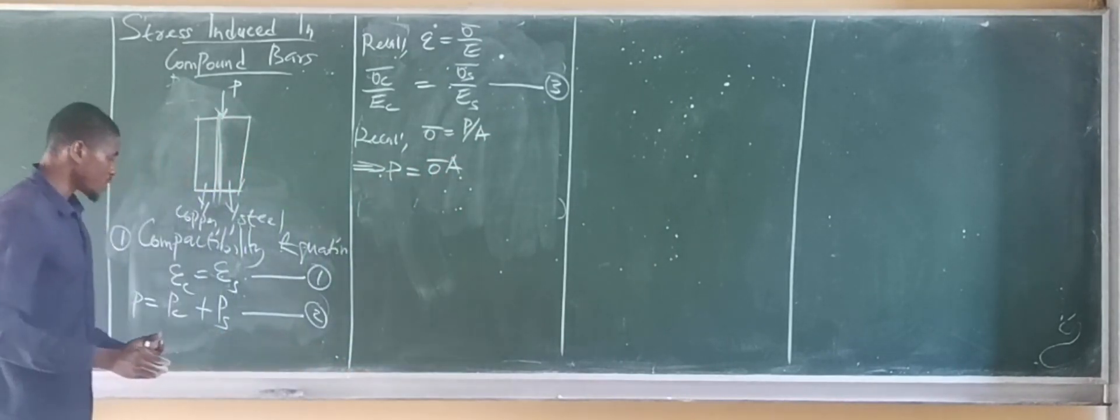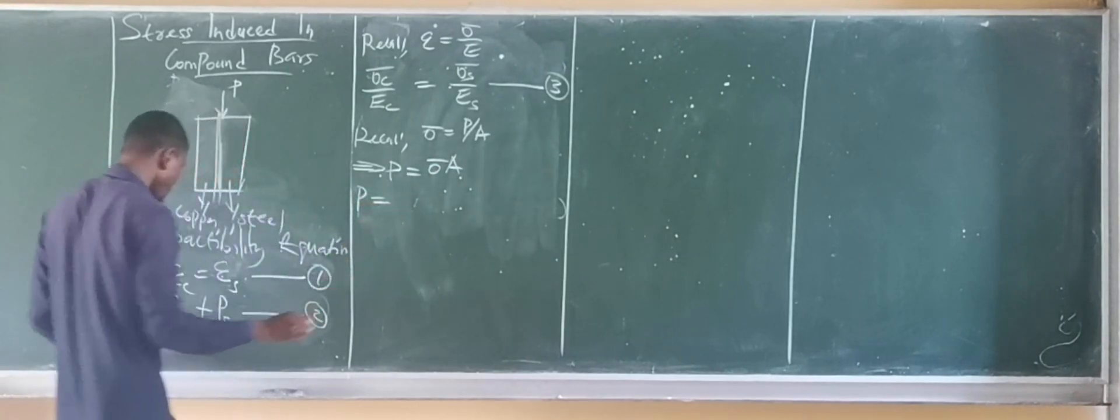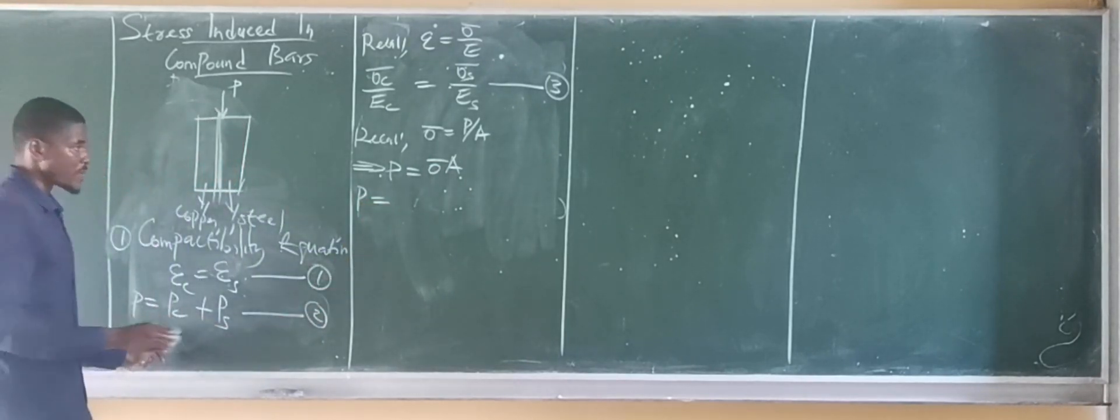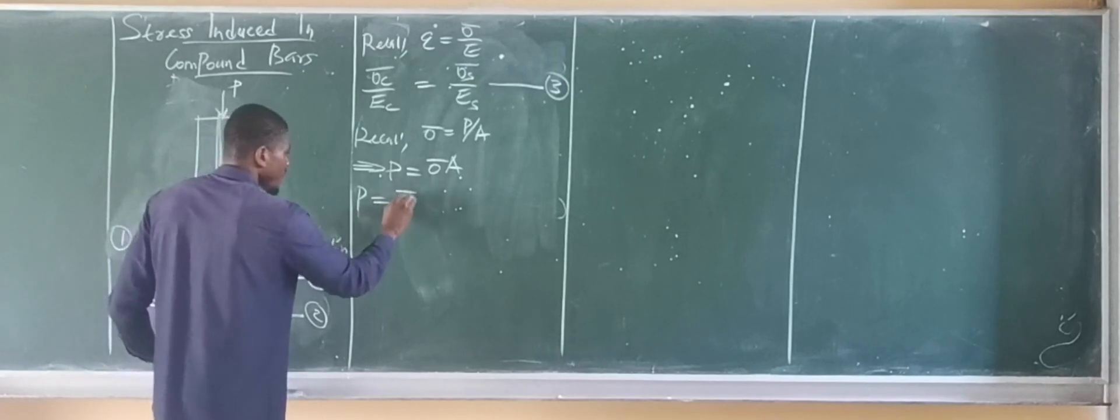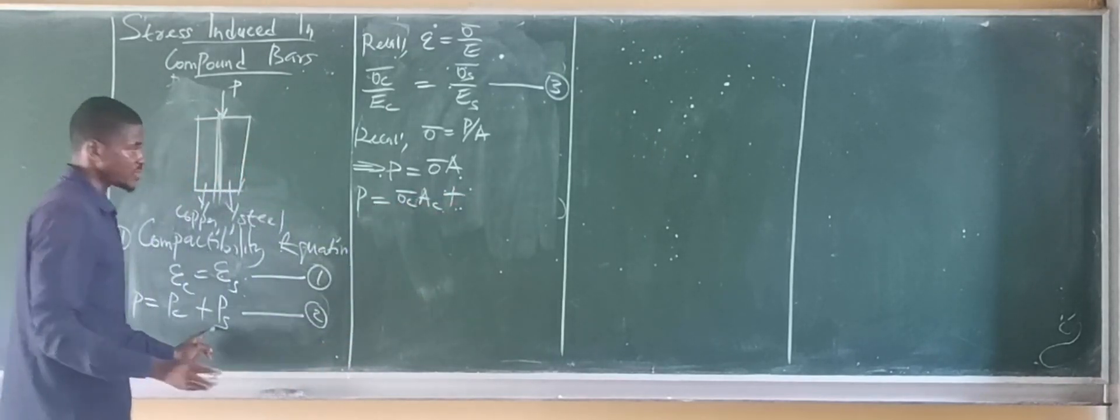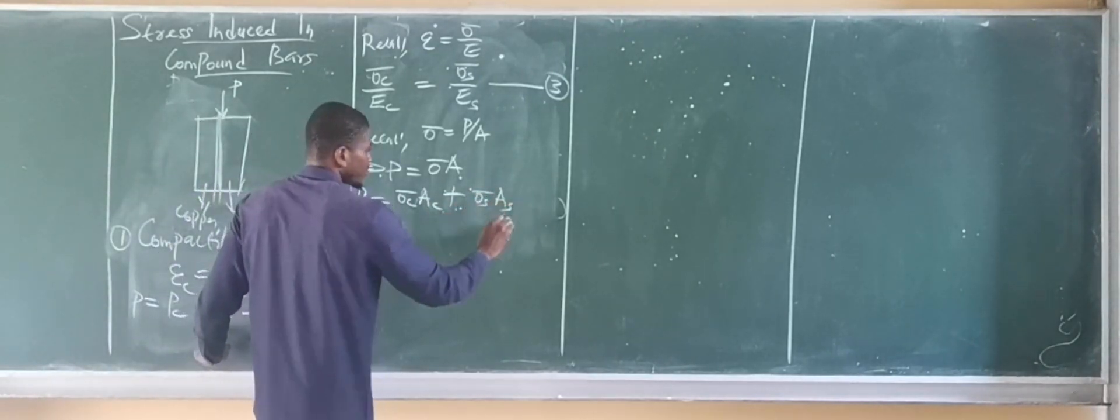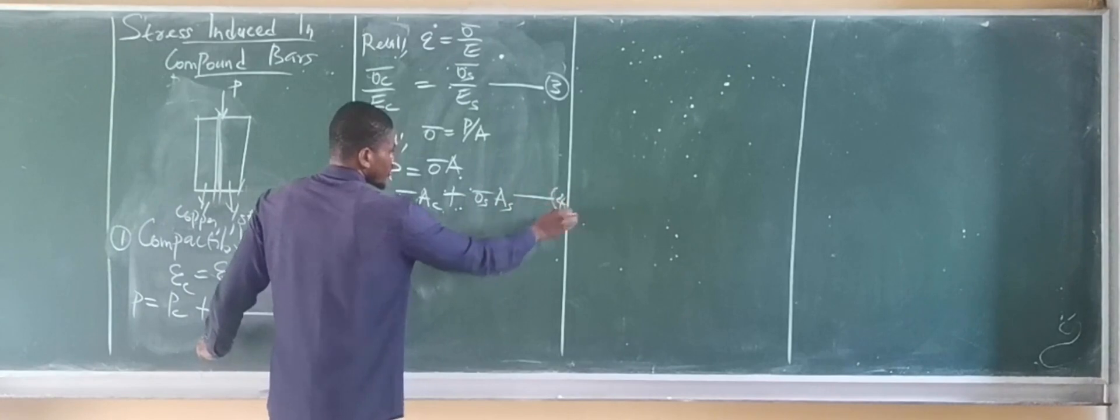So if this is true, then load carried by a compound bar P is actually equal to load carried by copper, which is stress of copper times area of copper, plus load carried by steel, which is stress of steel times area of steel. So this can be called equation 4.